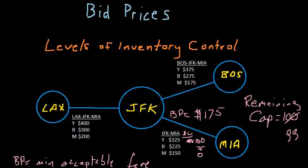Now let's take that concept and extend that to the rest of our network here. I'm just going to make up some bid prices to illustrate this. Let's say the bid price from LAX to JFK is $200, and from Boston to JFK the bid price equals zero.